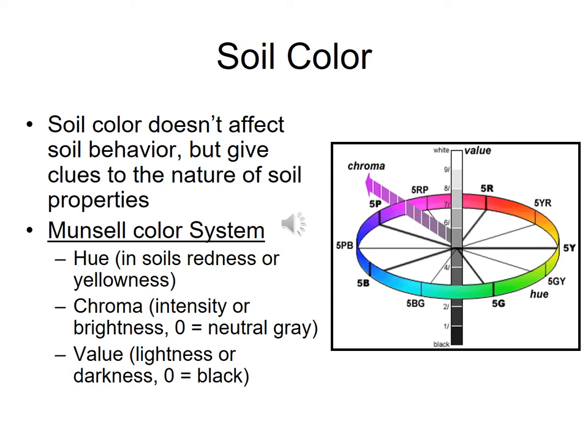These are three distinct things — if you've done oil painting and mixed paints, you may already know this. In soil, hue relates to the redness or yellowness of the soil. Chroma is the intensity of that color, and value is the lightness or darkness. Generally, the lighter the soil, the less organic matter and the less fertile it is, and this often relates to going deeper in the profile.